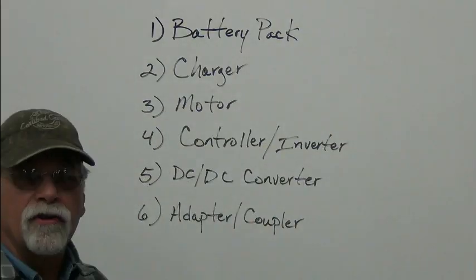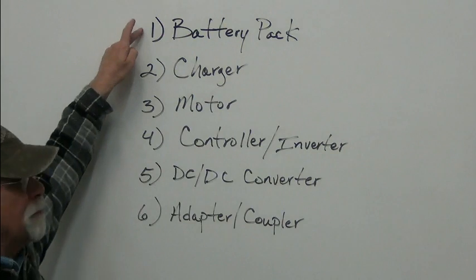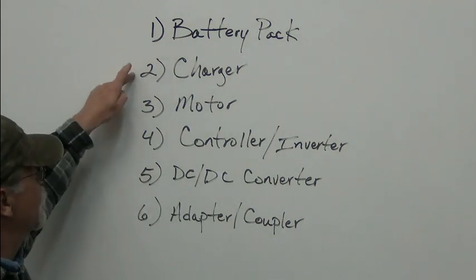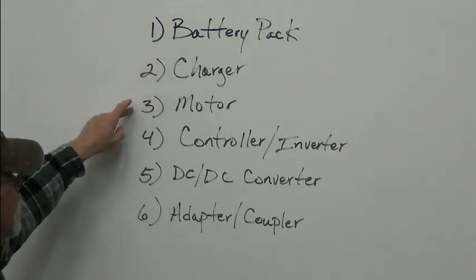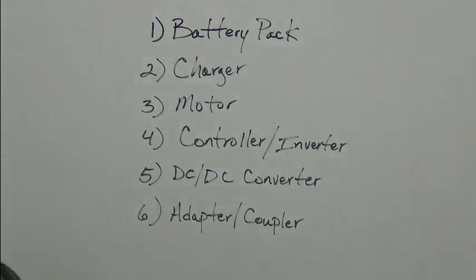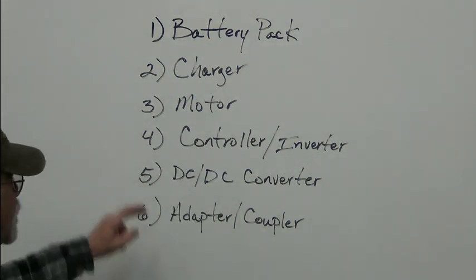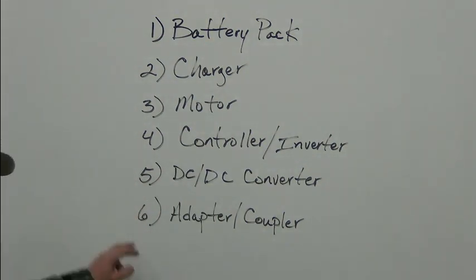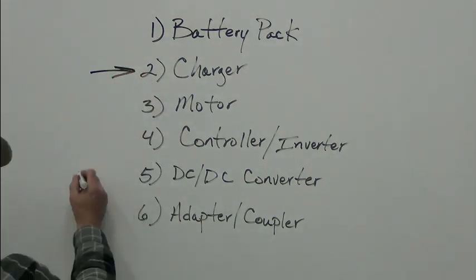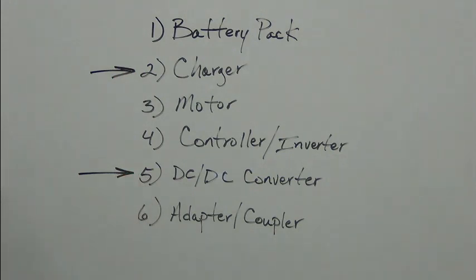There are six main components used in a conversion. You've got your battery pack, charger, motor, controller or inverter, DC to DC converter, and the adapter coupler. And in today's episode, we're going to talk about two of them. We're going to talk about the charger and the DC to DC converter.